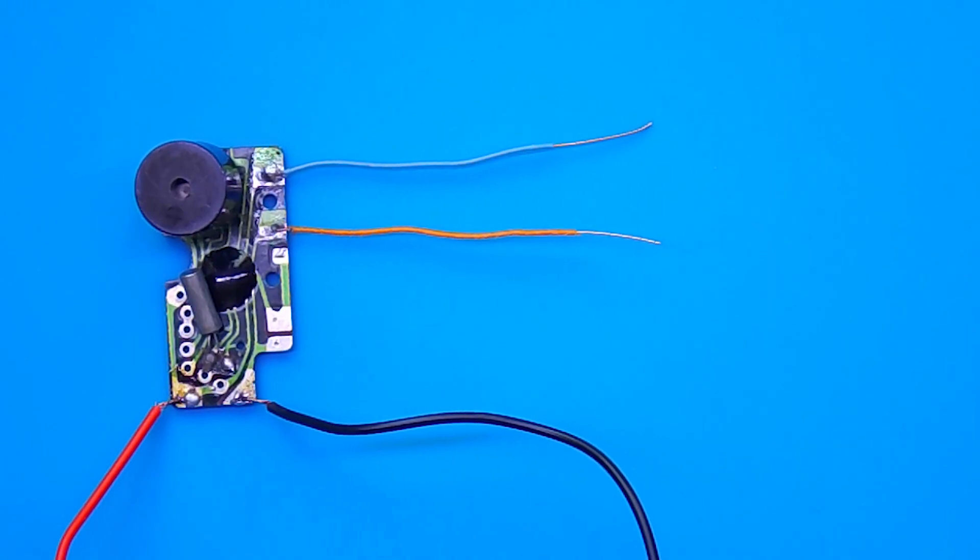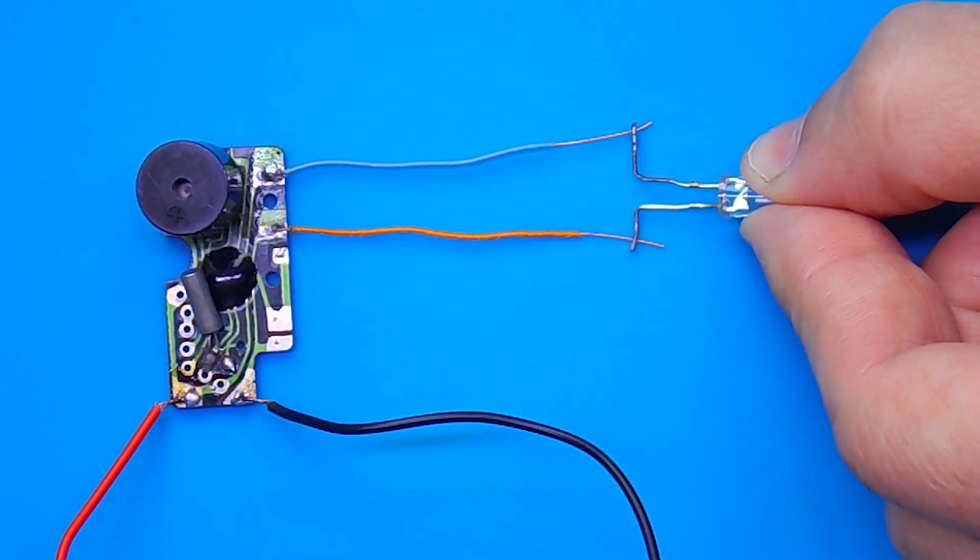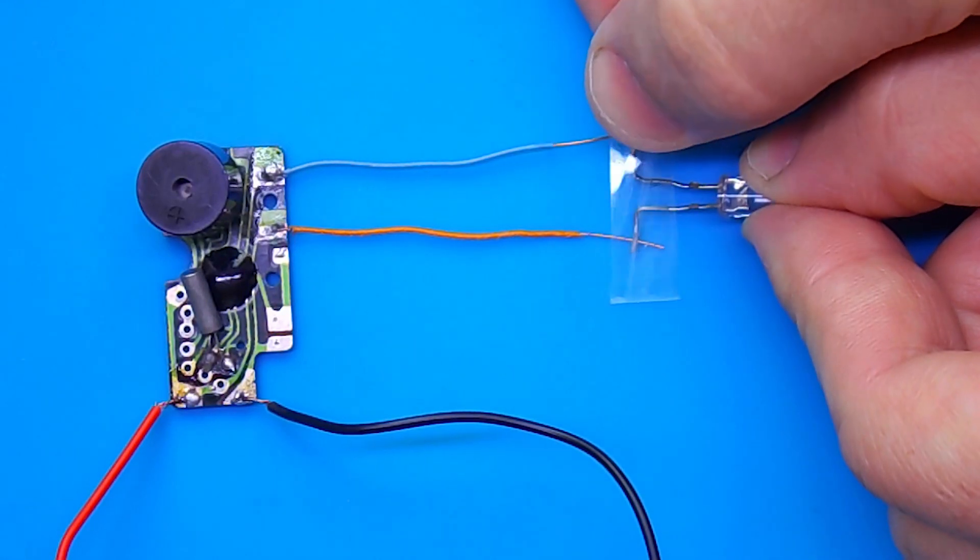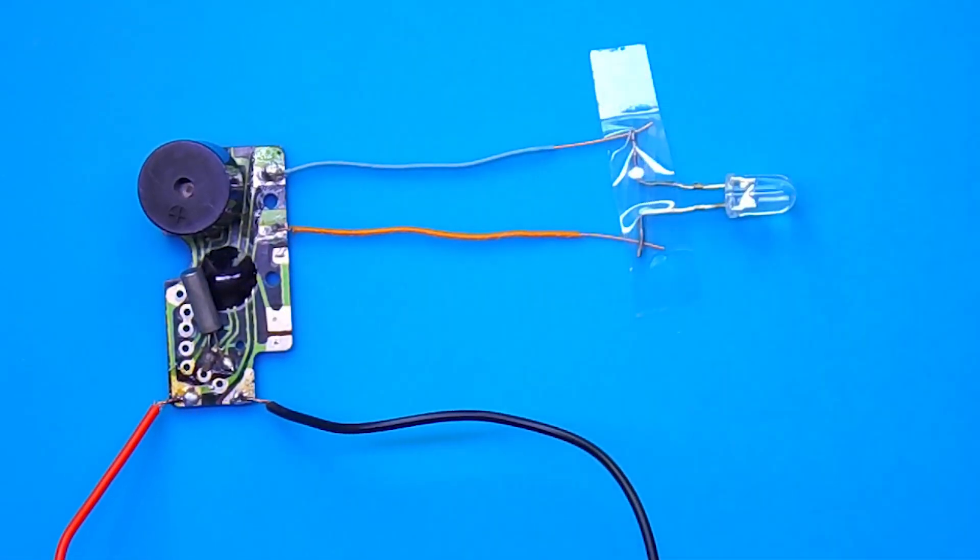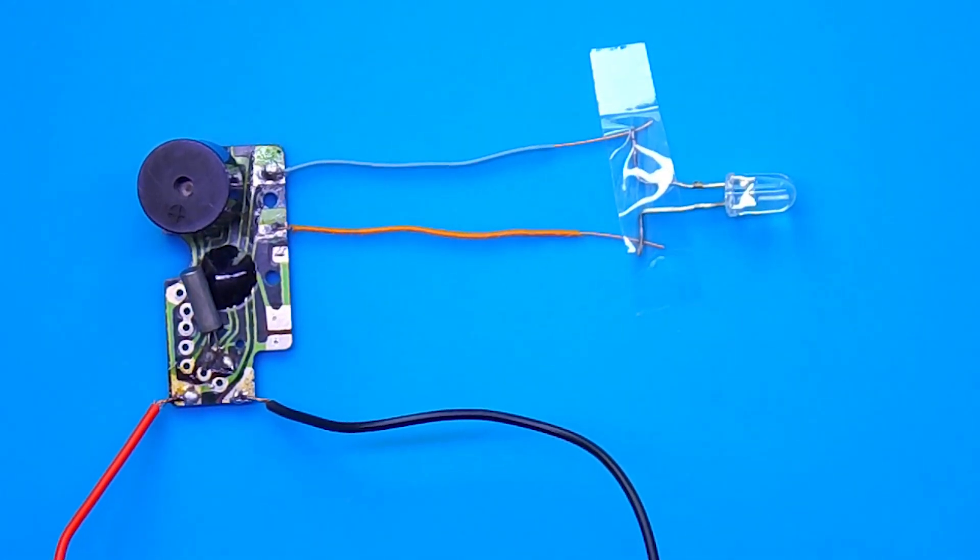When everything is soldered and power is applied, you can connect a 5mm white LED. The LED starts flashing immediately. The flashes repeat every 2 seconds.